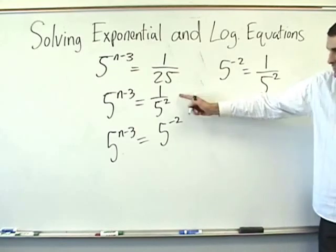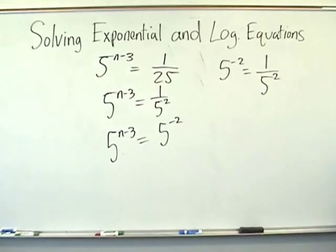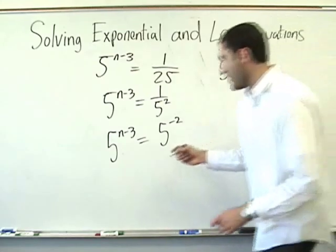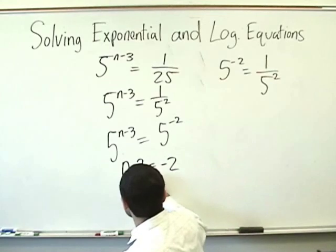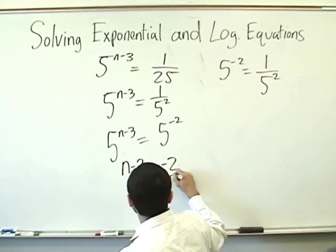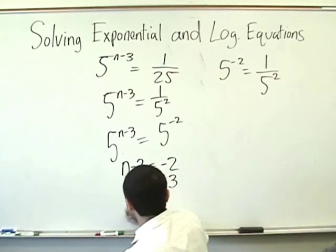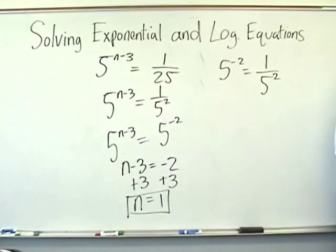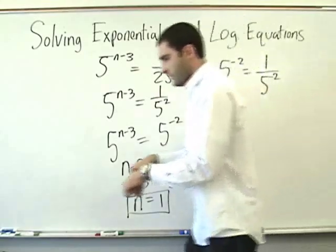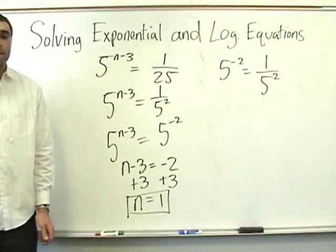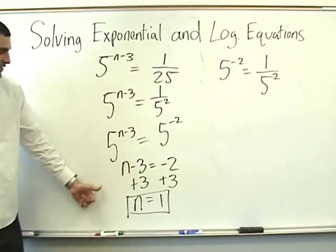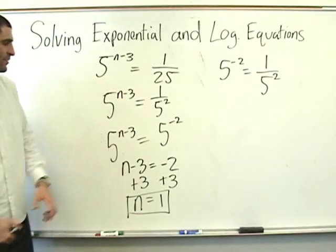So applying that rule here, we can set up the equation: m minus 3 equals negative 2. Add 3 to both sides. m equals 1. The point is to make the same base, and then we set the exponents equal.